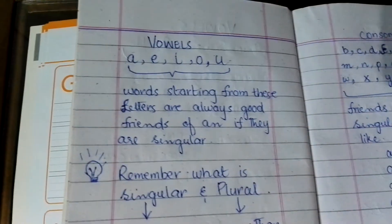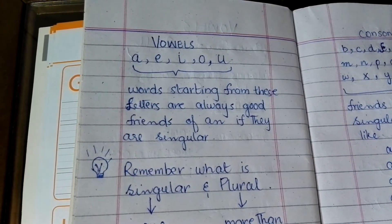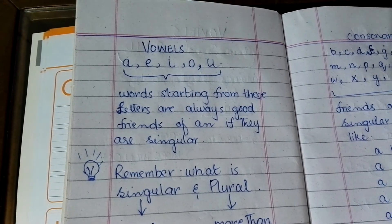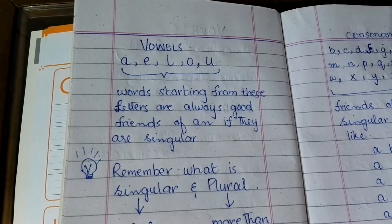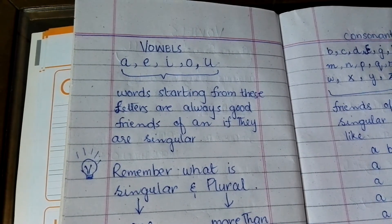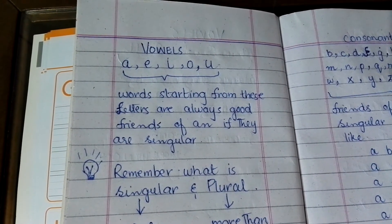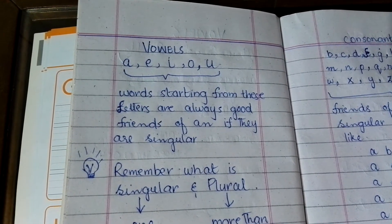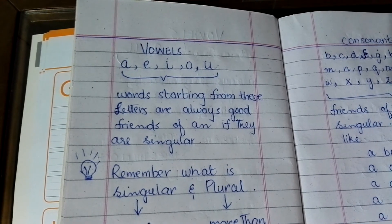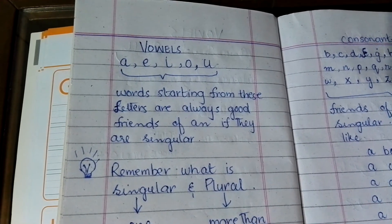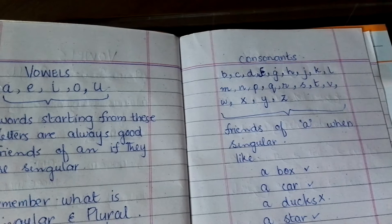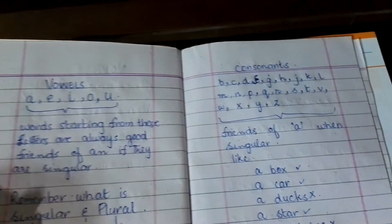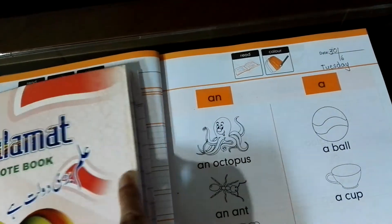Aapne yeh yaad rakhna hai ki the vowels are A, E, I, O, U. In se shuru hone wale jo words hain, agar wo singular hoon, to unse pehle hum 'an' lagate hain. Aur jo consonants hain, unse agar koi word shuru ho aur wo singular ho, to unse pehle hum 'a' lagate hain.